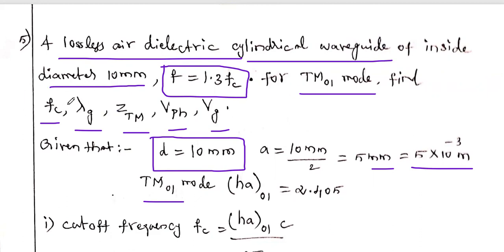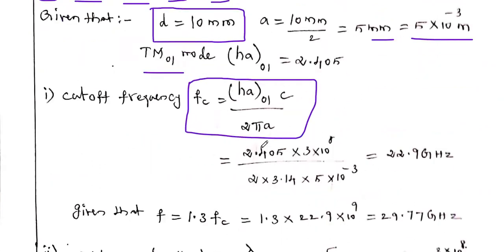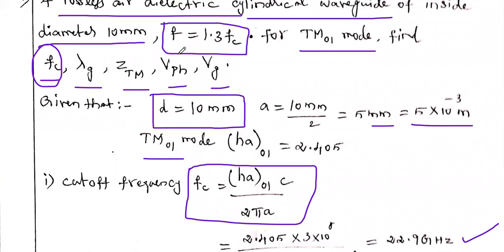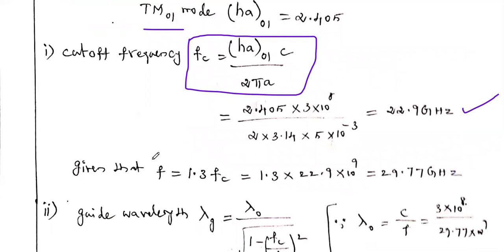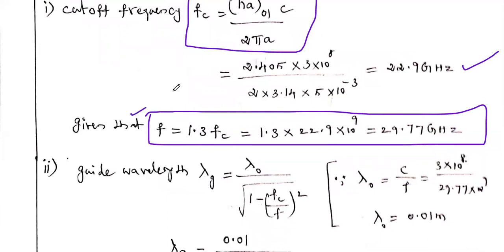First, calculate the cutoff frequency: Fc = Ha_01 × C / (2π A) = 2.405 × (3×10^8) / (2π × 5×10^-3) = 22.9 GHz. Then the operating frequency: f = 1.3 × Fc = 1.3 × 22.9 = 29.77 GHz.